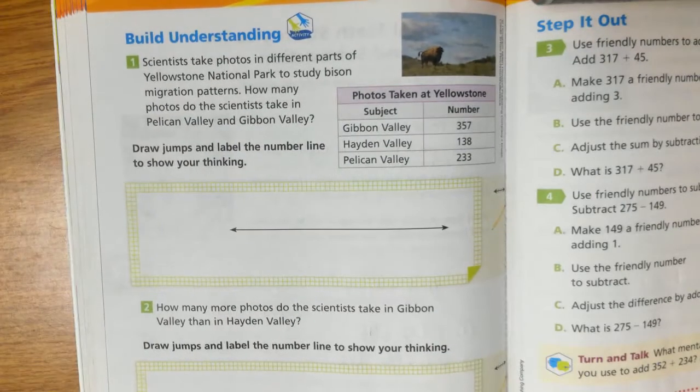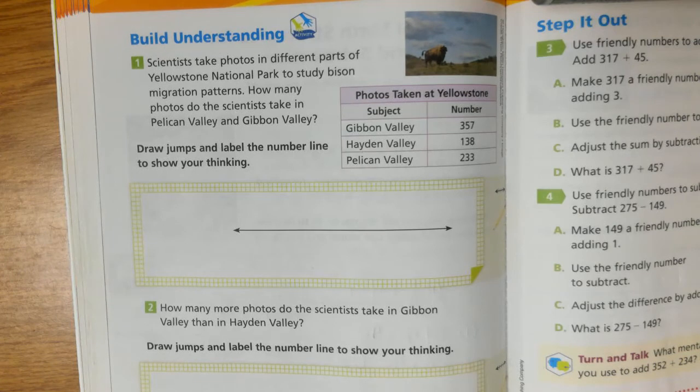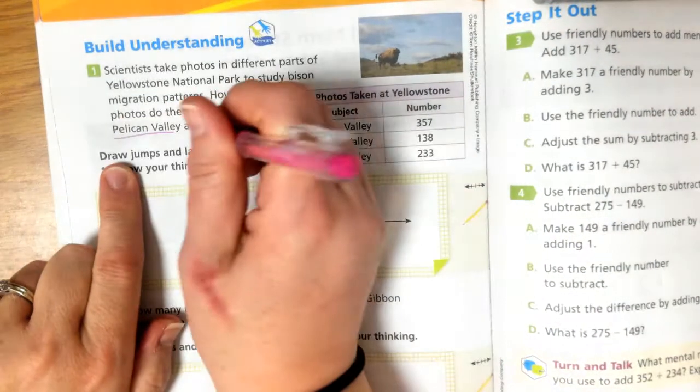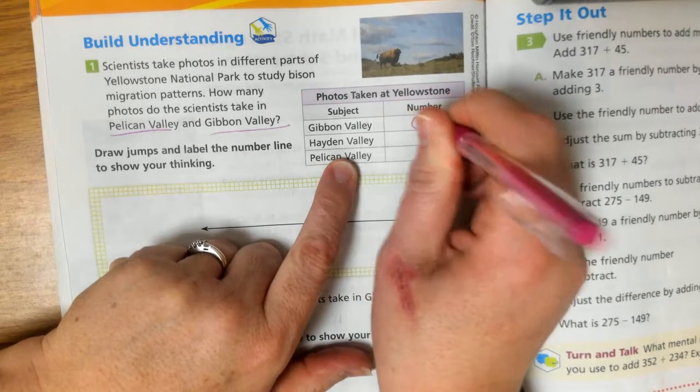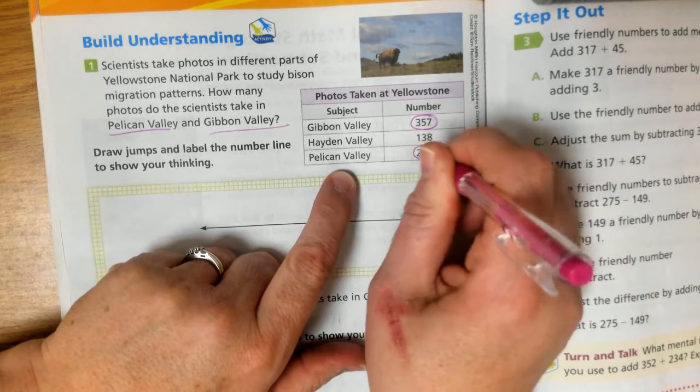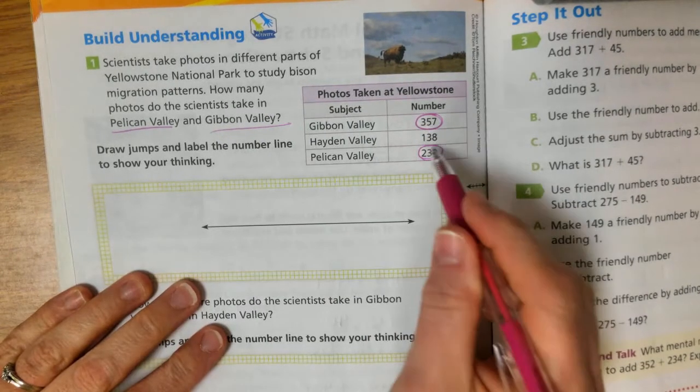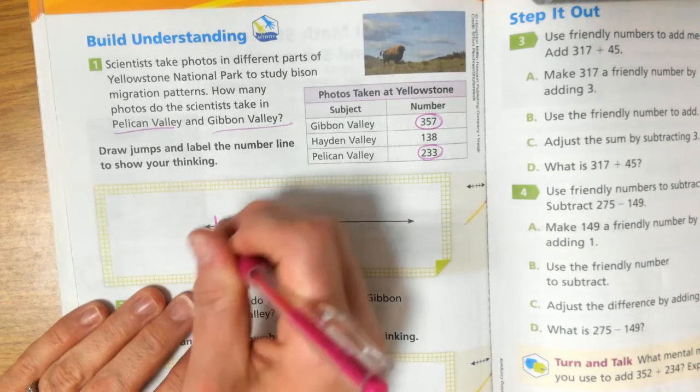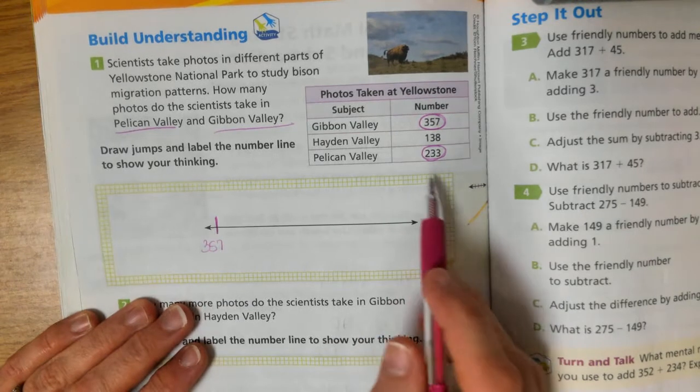Scientists take photos in different parts of Yellowstone National Park to study bison migration patterns. How many photos do scientists take in Pelican Valley and Gibbon Valley? Draw jumps and label the number line to show your thinking. We want Pelican Valley and Gibbon Valley. There's 357 in Gibbon Valley and 233 in Pelican Valley. So we're adding these two numbers together, right? We're adding 357 to 233. I'm going to start my number line at 357.